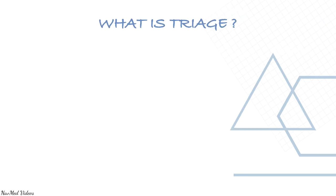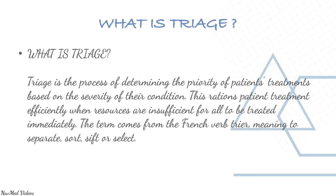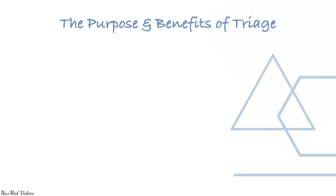What is triage? Triage is the process of determining the priority of patient treatments based on the severity of their condition. This rationalizes patient treatment efficiently when resources are insufficient for all to be treated immediately. The term comes from the French verb 'trier,' meaning to separate, sort, sift, or select.